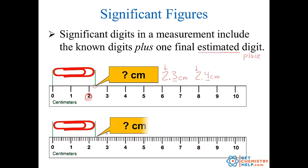Now on this ruler we have the ones place marked but we also have the tenths place marked — we can see 0.1, 0.2, 0.3, 0.4, 0.5, etc. So now what do I clearly know? Well I know the 2 for sure and I know it's 0.3 for sure. But there's a hundredths place that I can estimate, so I'm going to say that looks like about 2.33 centimeters. You might say 2.34 or 2.32 — that's fine because we all agree on the ones and tenths but we're estimating the hundredths. The rule is you record all digits clearly marked on your measurement device plus one final estimated place.